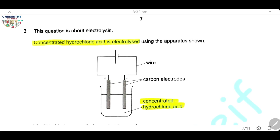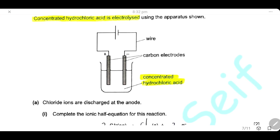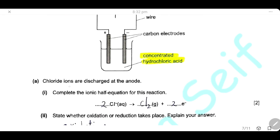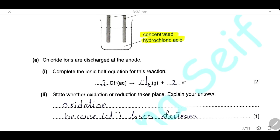Question 3. This question is about electrolysis. Concentrated hydrochloric acid is electrolyzed using the apparatus shown, with two carbon electrodes. Chloride ions are discharged at the anode. Complete the ionic half equation: each two chloride ions lose two electrons and are converted into chlorine gas: 2Cl⁻ → Cl₂ + 2e⁻. This reaction is oxidation because chloride ions lose electrons.